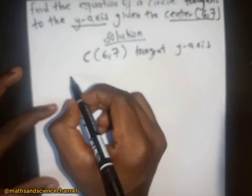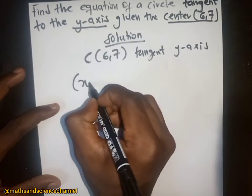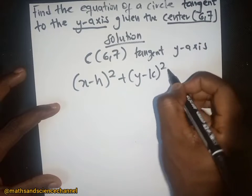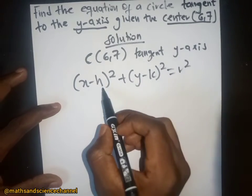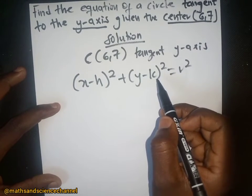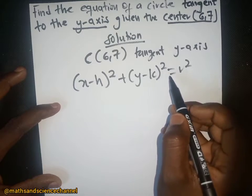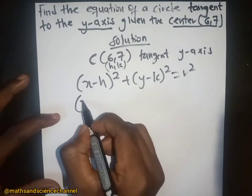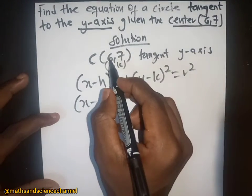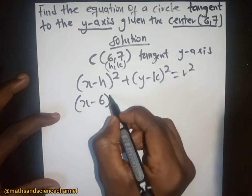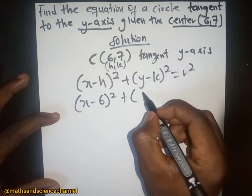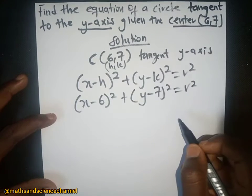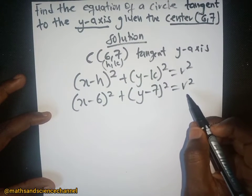The equation of a circle is given by (x minus h) squared plus (y minus k) squared equals r squared, where h and k represent the center. So substituting our center, we have (x minus 6) squared plus (y minus 7) squared equals r squared. Now the question is: what is the radius?